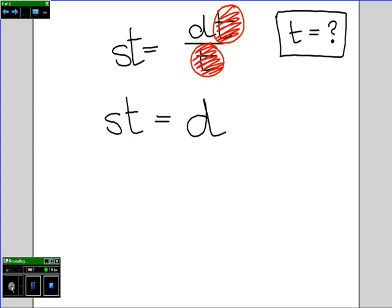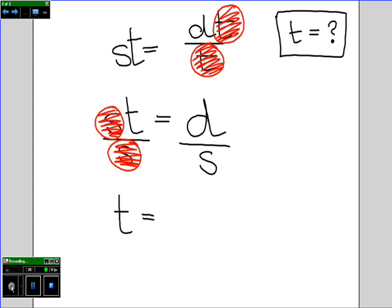We want to make t the subject, so we need to divide both sides of this equation by s. Notice now on the left-hand side, we've got s divided by s, and these will cancel out. This leaves us with an equation for the journey time, t equals d divided by s.